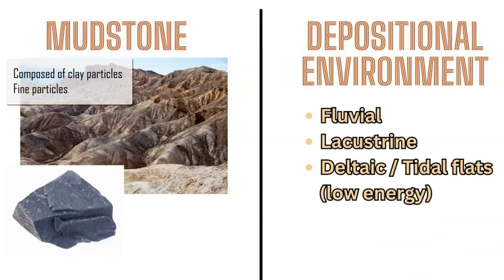Mudstone is formed from small clay particles, which is the smallest grain size — smaller than silt and sand. It forms in similar ways through fluvial, lacustrine, deltaic, and tidal flat environments, but in low energy settings due to the fine size of the grains and sediment forming this rock.